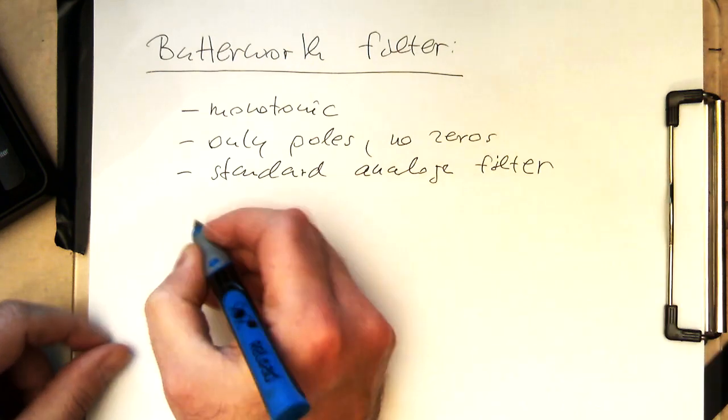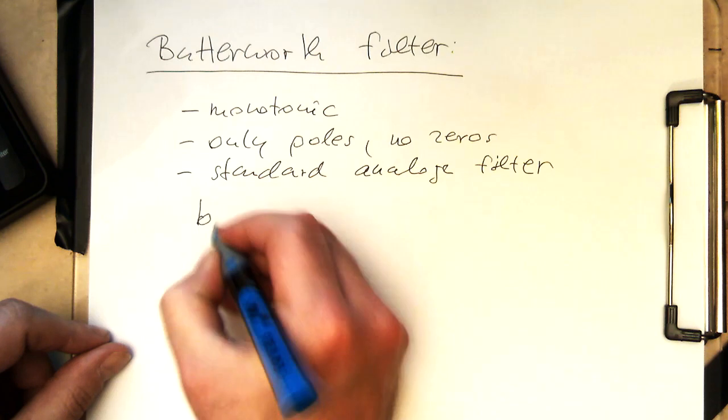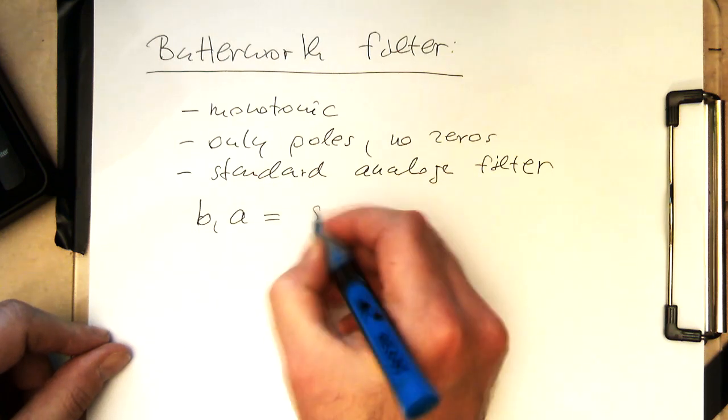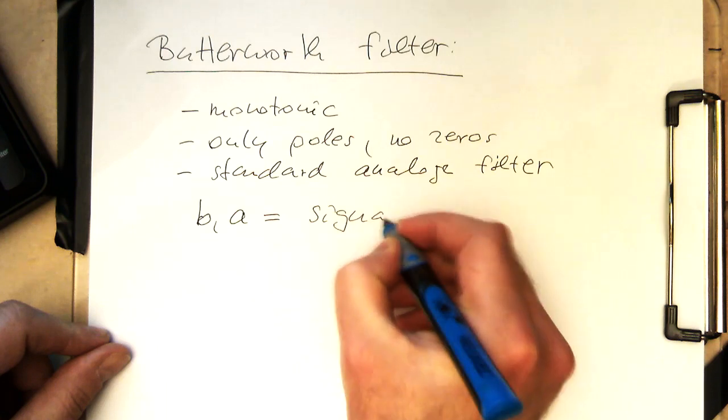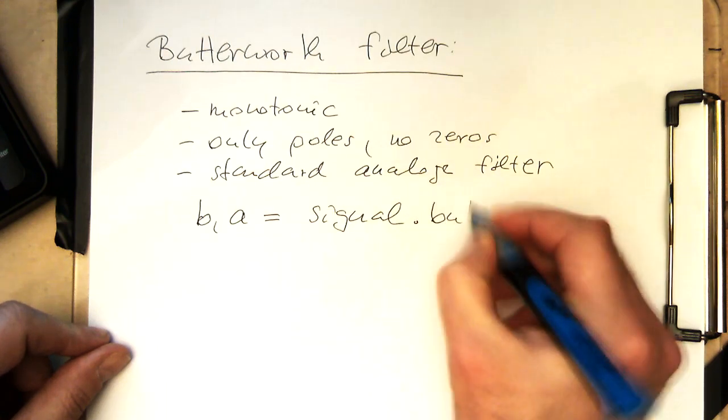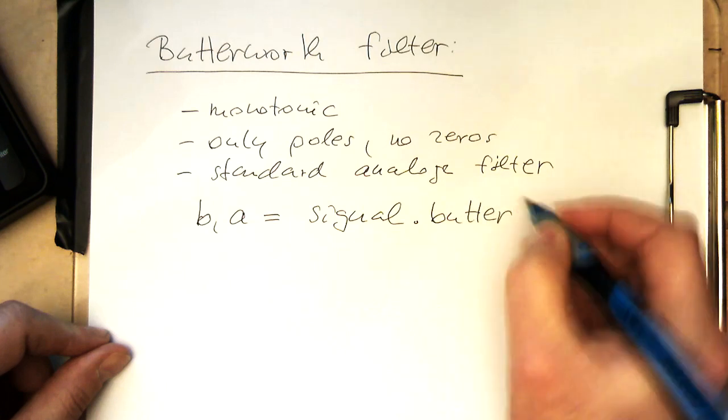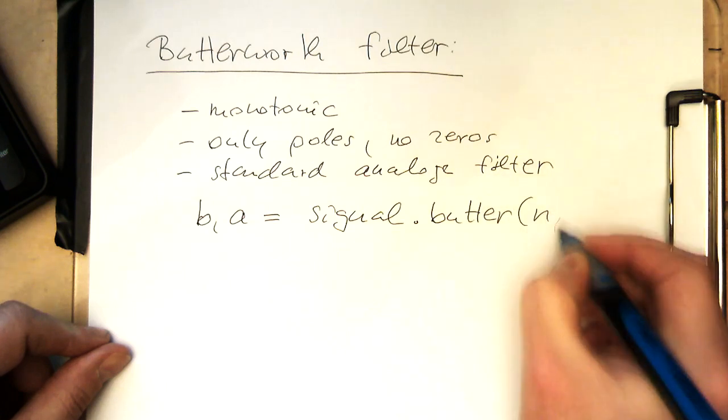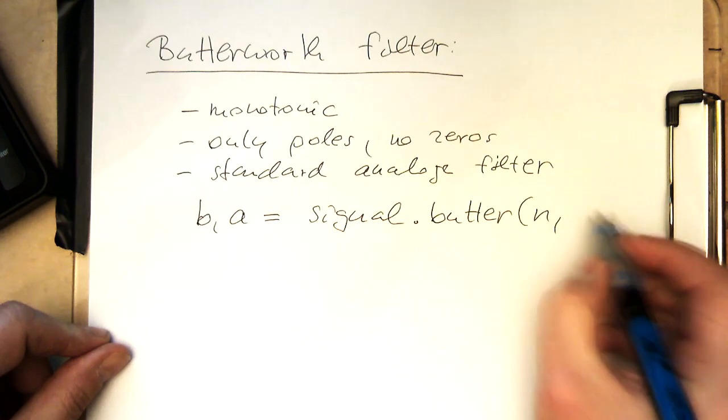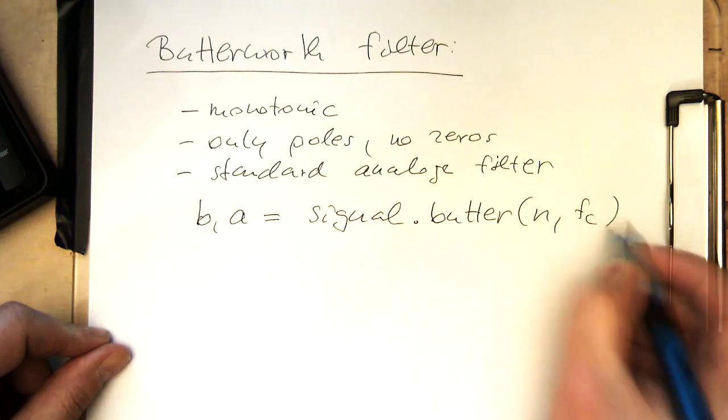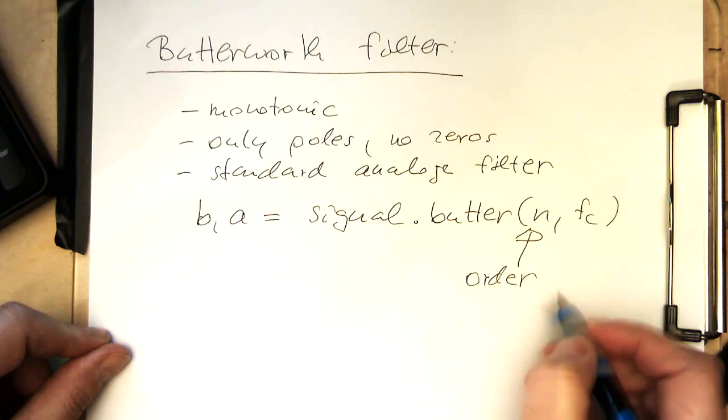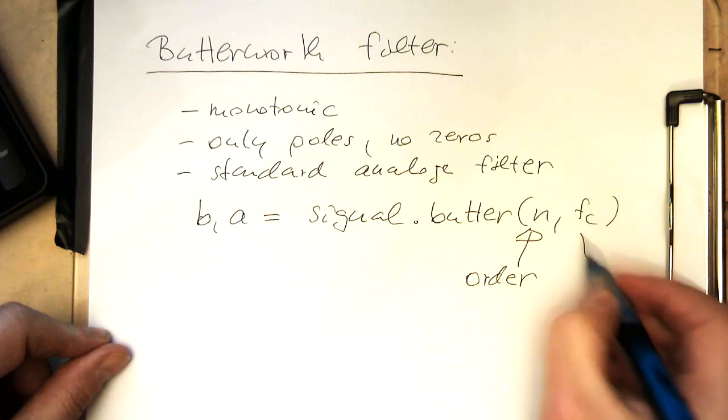So if you want to have filter coefficients, that is returned as a tuple, and then we've got the butter command, then we've got the order n, and then that's here our cutoff frequency fc. So that's the order, and that's the cutoff.